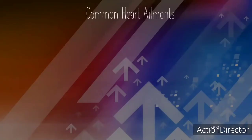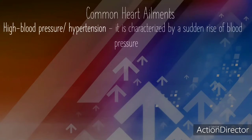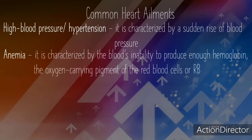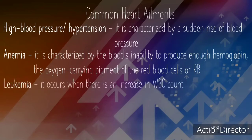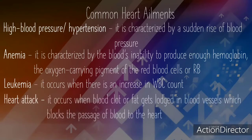Common Heart Illnesses. High blood pressure or hypertension is characterized by a sudden rise of blood pressure. Anemia is characterized by the blood's inability to produce ample hemoglobin, the oxygen-carrying pigment of the red blood cells. Leukemia occurs when there is an increase in white blood cell count. Heart attack occurs when a blood clot or fat gets lodged in blood vessels, which blocks the passage of blood to the heart.